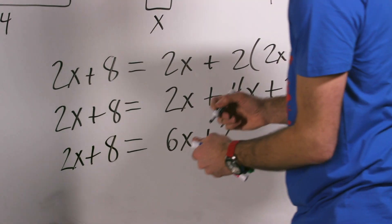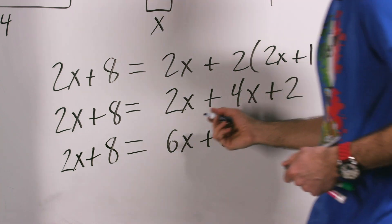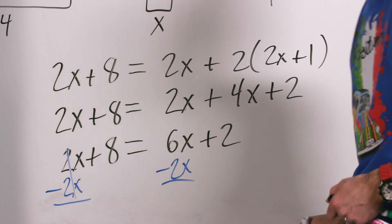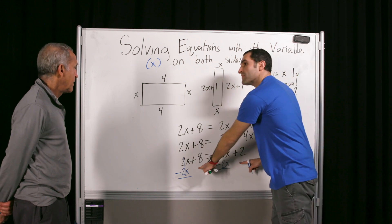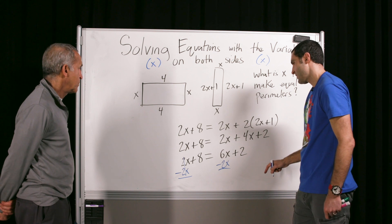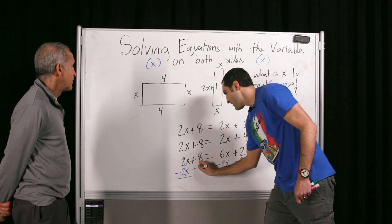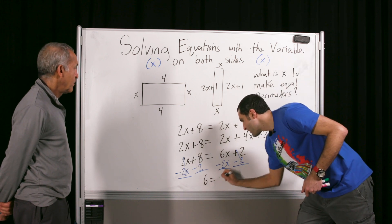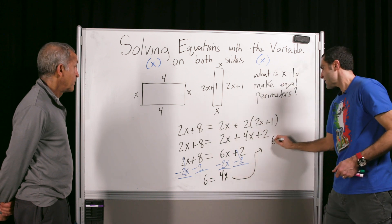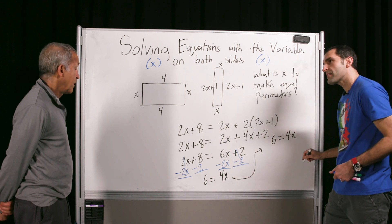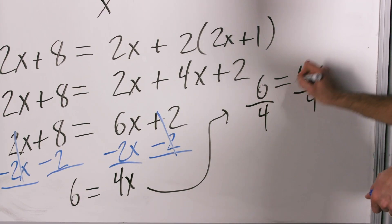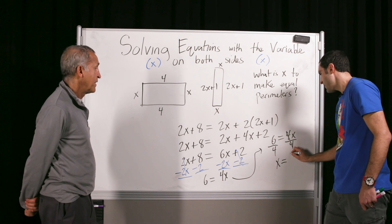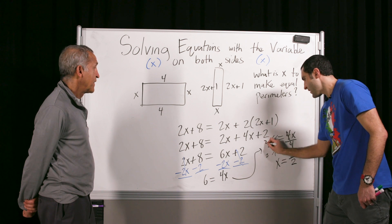Let's isolate x. Let's do minus 2x — bring it to the left. Do what to both sides? Minus 2. Leaving 6 equals 4x. Divide both sides by 4. X equals six fourths, which simplifies to three over two — that's 1 and a half, or 1.5.